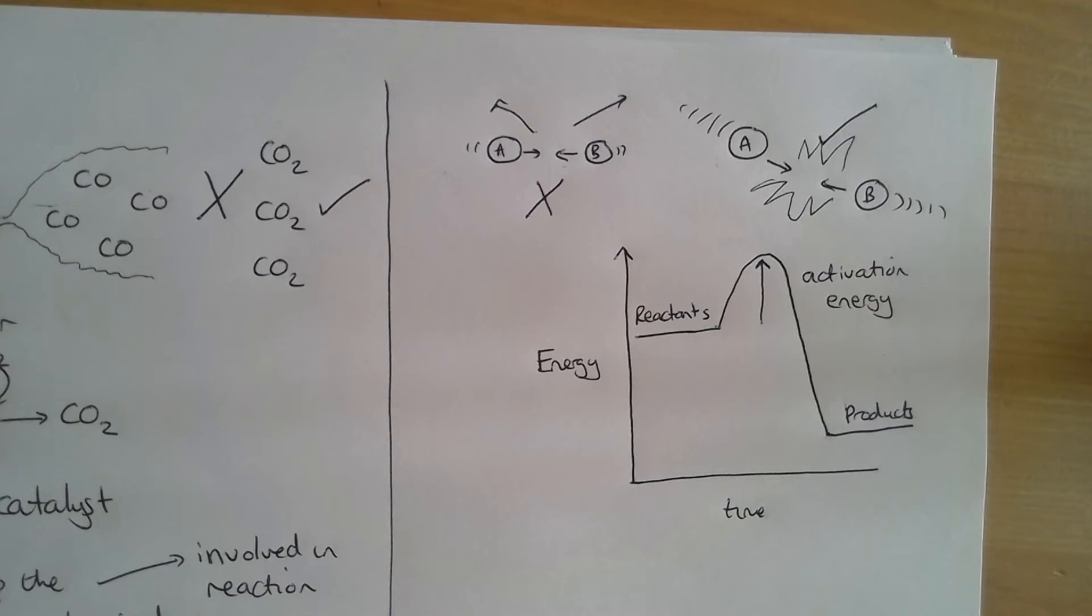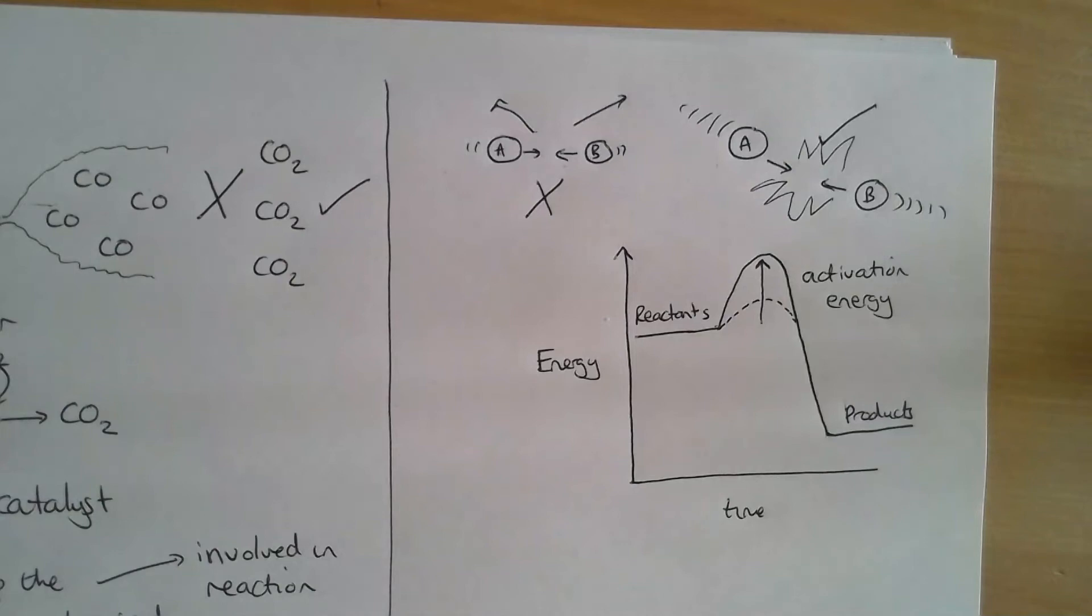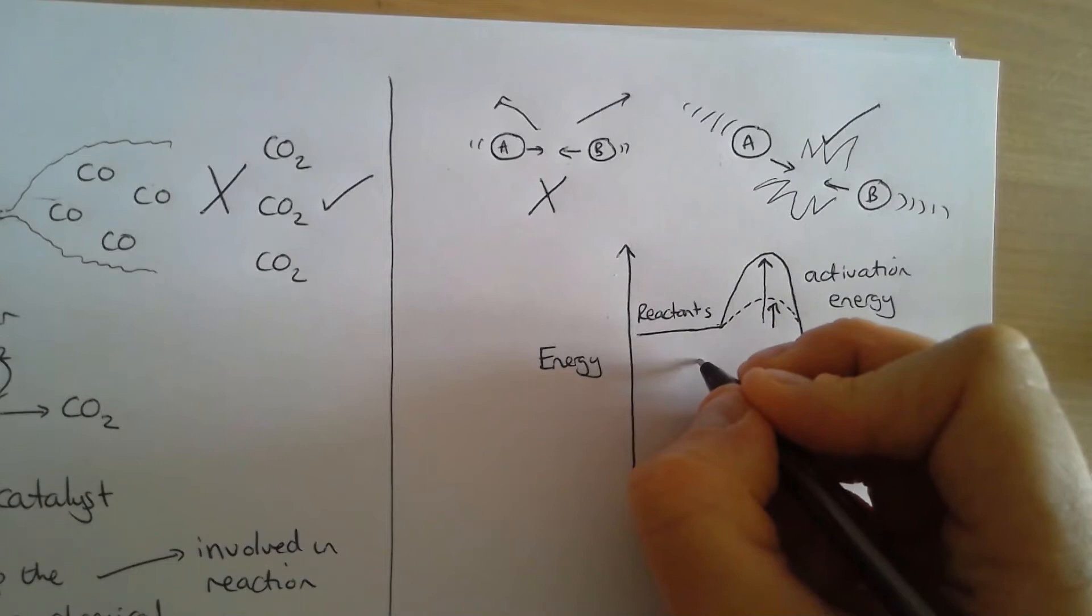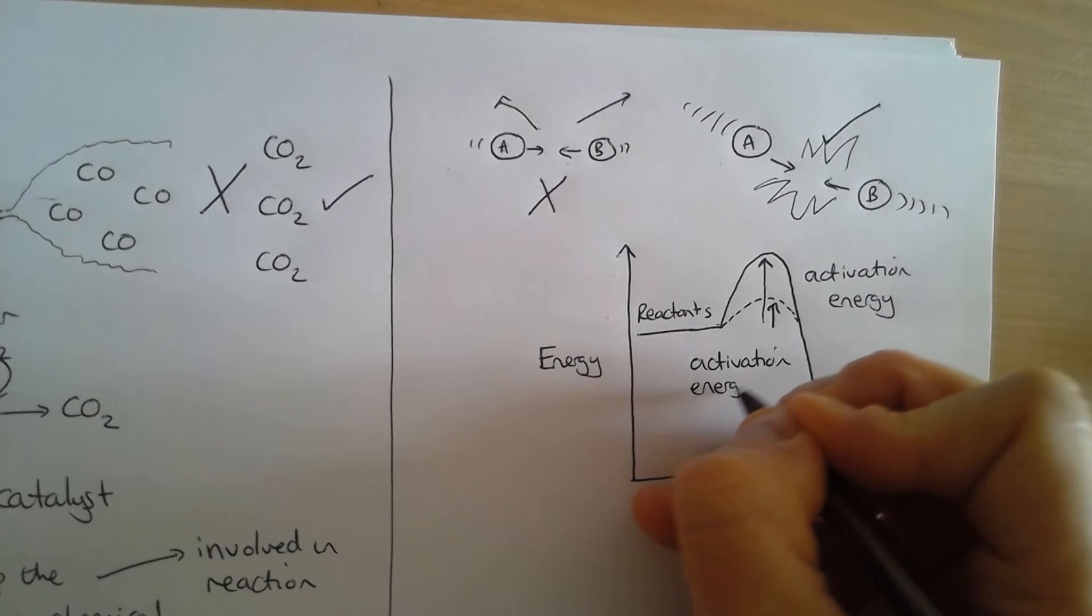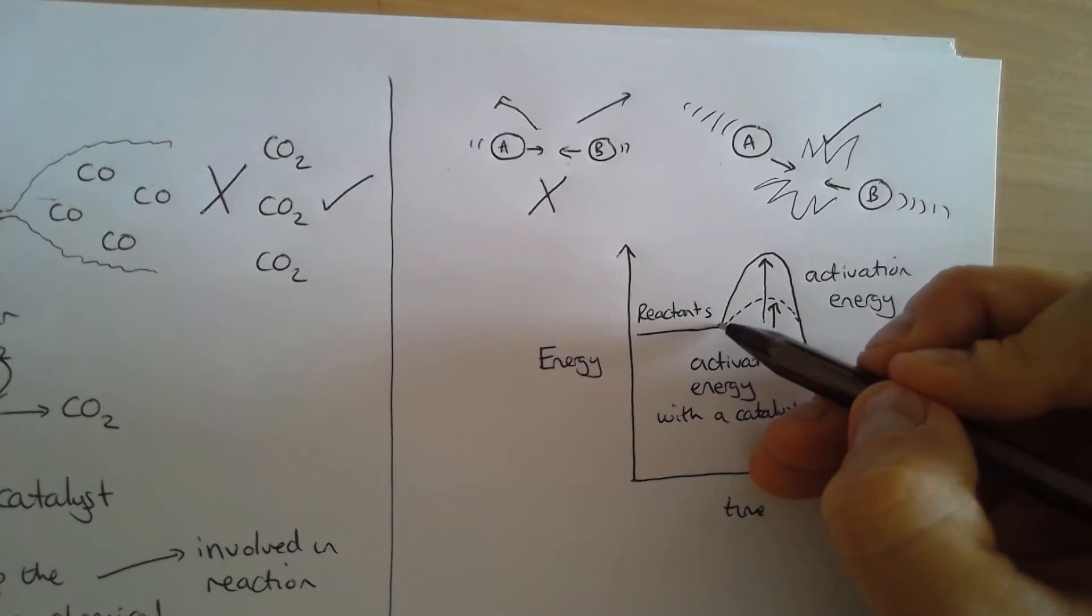This dotted line here represents the activation energy. This solid line here is the activation energy without a catalyst. This dotted line is the activation energy with a catalyst. So let's summarize that.